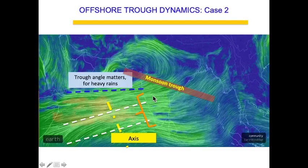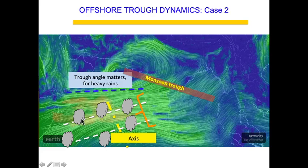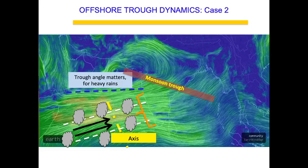In the second case, the monsoon trough has shifted south, activating the offshore trough over South Konkan and Kerala — cloud bands are moving toward South Konkan and Kerala. The trough angle changes: in the north case it is nearly straight, whereas in the south case it is more angled. Wind speeds on the chart (red being highest) are very active only up to South Konkan and Goa. When the monsoon trough shifts south, Mumbai generally doesn't get much rain. The offshore trough position, monsoon trough position, and Bay of Bengal low pressure position together determine which part of the west coast gets heavy rain.